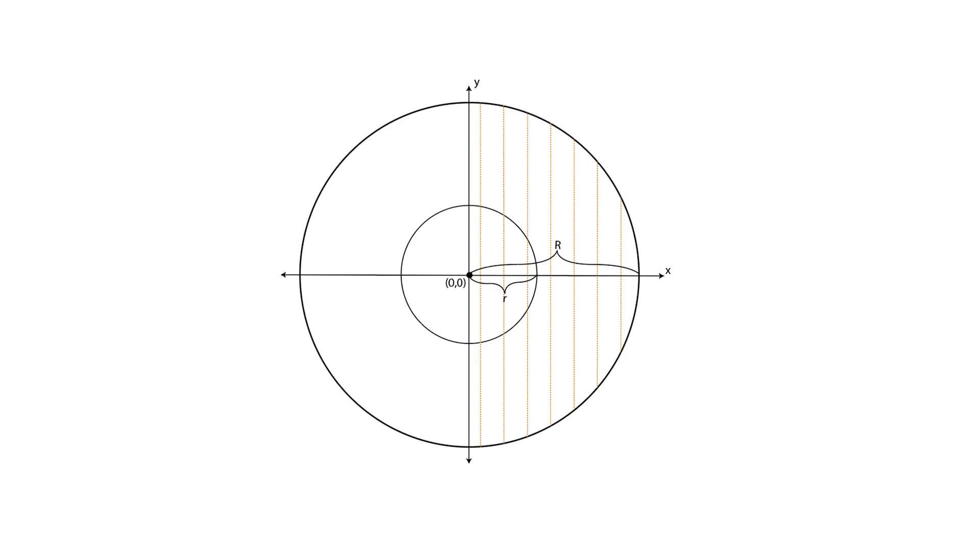The chord will be longer than a side of the triangle if the point you pick is closer to the center of the circle than where the triangle's side touches the radius. The probability of this happening is one-half, or of course, 50%.